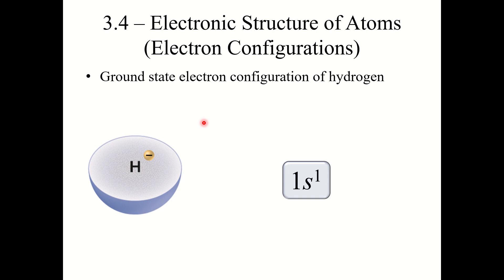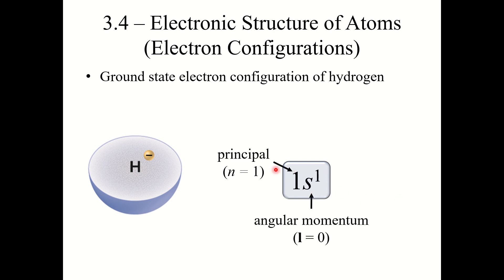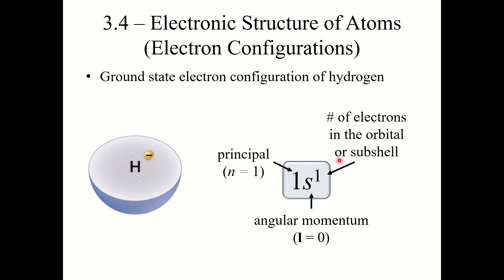We're going to start with hydrogen. Hydrogen's ground state electron configuration is 1s1. Electron configurations tell you where the electrons are — which orbitals they're in and how many electrons are in each orbital. Hydrogen has one electron in the 1s orbital. The '1' is the principal quantum number n=1, 's' comes from the angular momentum quantum number l=0, and the superscript tells you how many electrons are in that subshell.